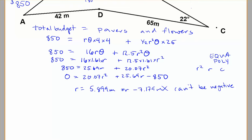But I'll write that out here for us. So r equals 5.899 meters or negative 7.179 meters. Can't be negative. So we can try maybe an r equals 5.9. Now you notice 5.9 is slightly bigger than 5.899, and 5.9 also doesn't fit into a paver category very well. You can't really use a quarter of a paver.